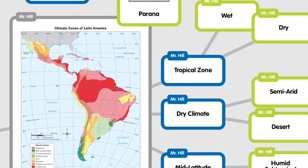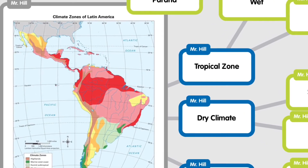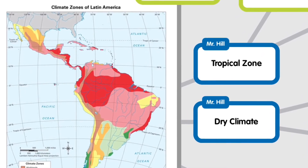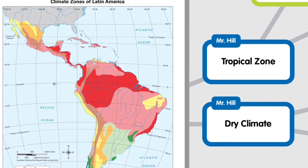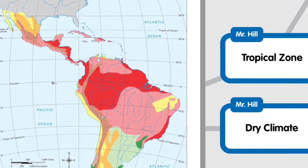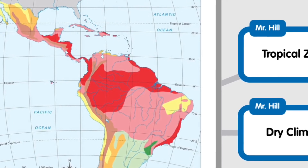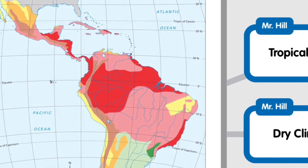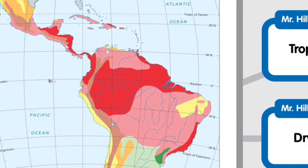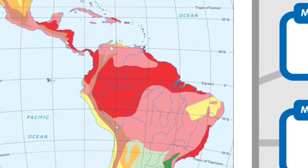The first climate zone is the tropical zone, located on the equator, which receives most of the sun's direct rays — so it's very warm and humid with a lot of moisture. You've got tropical wet and tropical wet and dry. Tropical wet is where your rainforests are — dense forests made up of the most diverse wildlife on earth. The Amazon rainforest, the world's largest rainforest, has more plants and animals than anywhere else on earth. Tropical wet and dry is found in South America, featuring savannas — tropical grasslands.